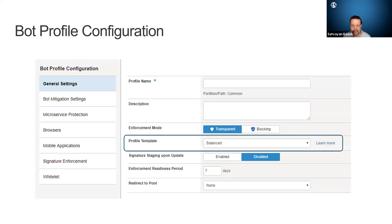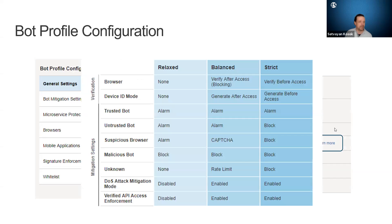One of the things I'll point out is that when you are creating bot templates, there are three different categories: relaxed, balanced, and strict. This lets you know how aggressive your detection is. And then we have one thing called DOS mitigation mode, which once we're creating a policy, we'll take a closer look at.